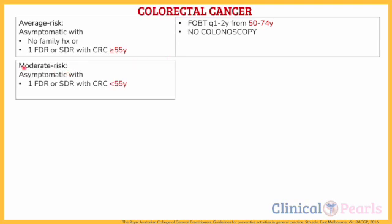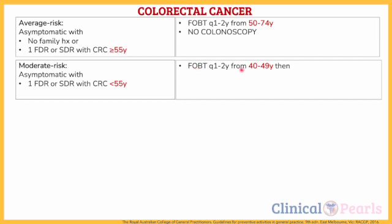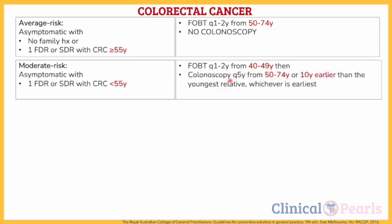Meanwhile, moderate-risk patients are those who are asymptomatic with one first- or second-degree relative diagnosed at less than 55 years of age. We do FOBT every 1 to 2 years from 40 to 49 years old, followed by colonoscopy every 5 years from 50 to 74 years old, or 10 years earlier than the youngest relative, whichever is earliest.